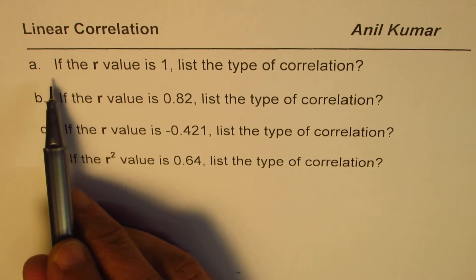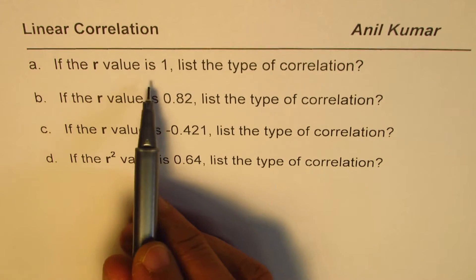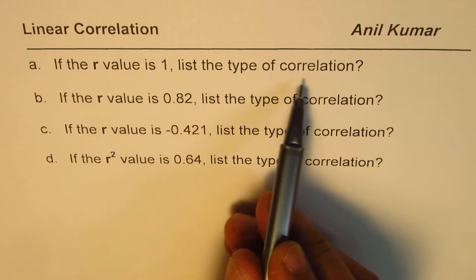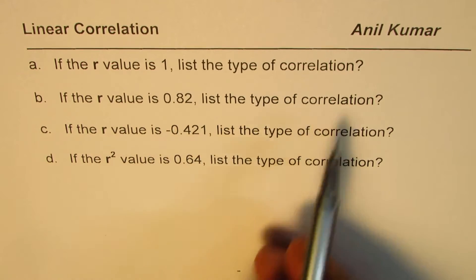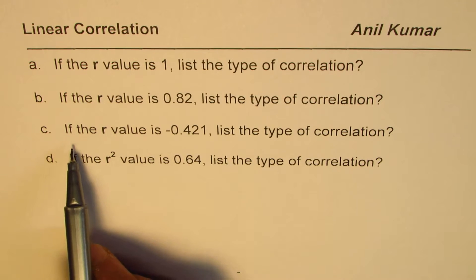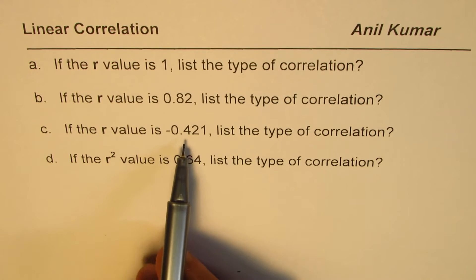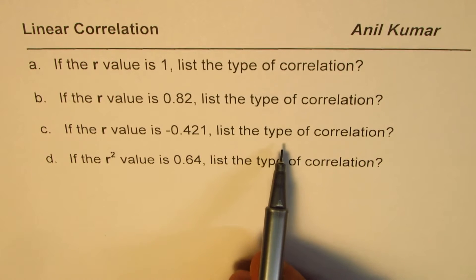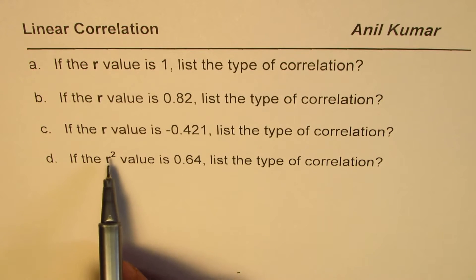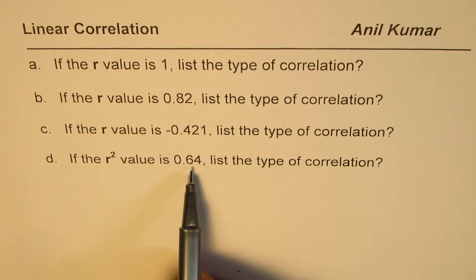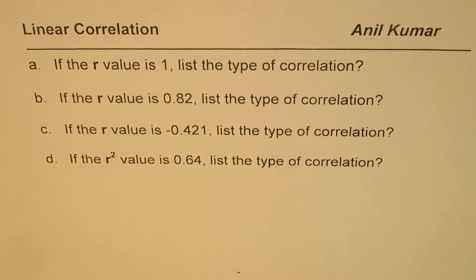Question A: If the r value is 1, list the type of correlation. Question B: If r value is 0.82, list the type of correlation. Question C: If the r value is minus 0.421, list the type of correlation. And Question D: If r square value is 0.64, list the type of correlation.